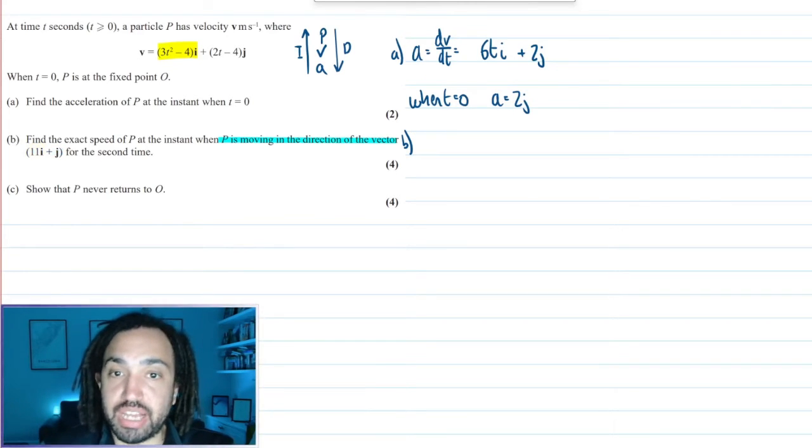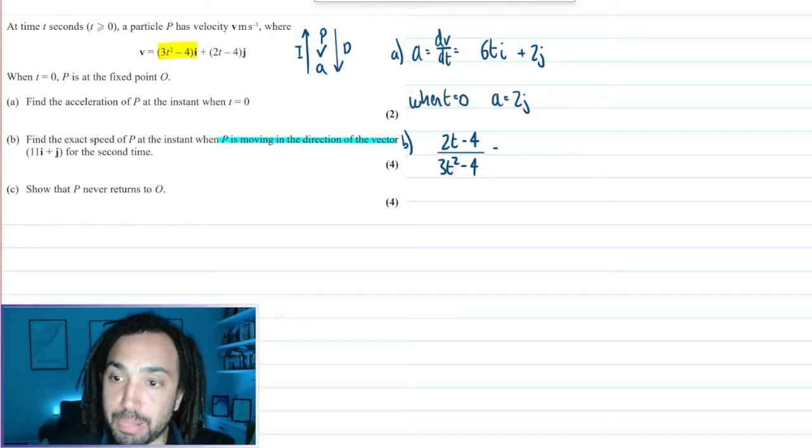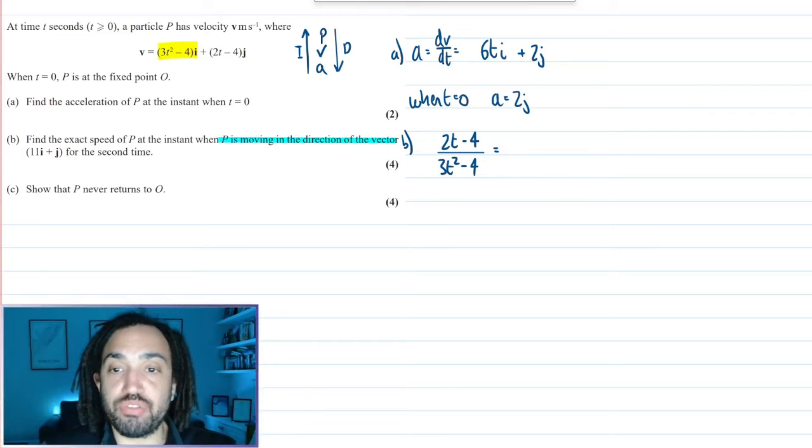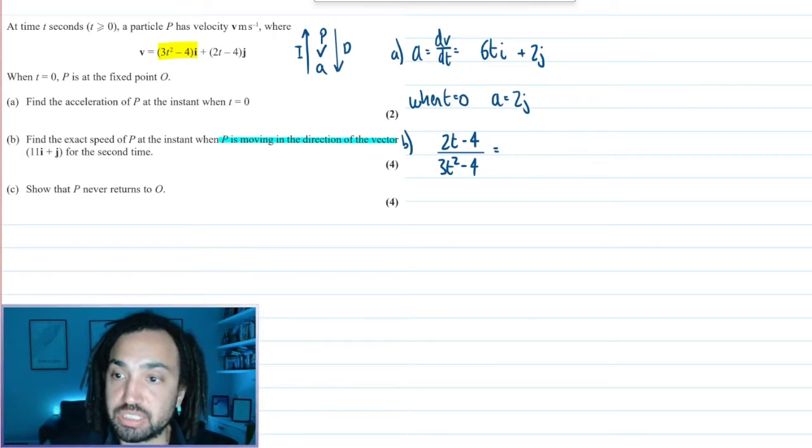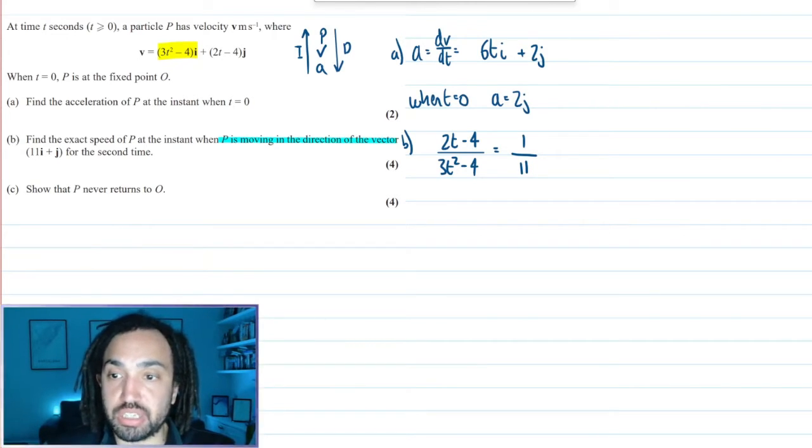So I say that 2t minus 4 is the j component divided by the i component, and that should be the same for the directional vector. So the j component is 1 and the i component is 11. So the ratios of the j's and the i's are the same.